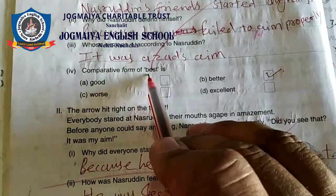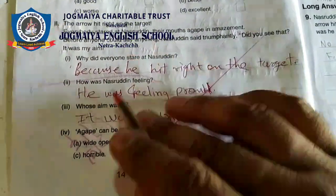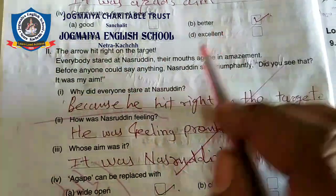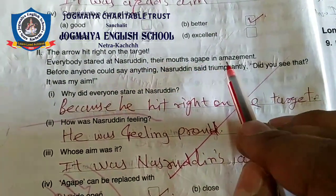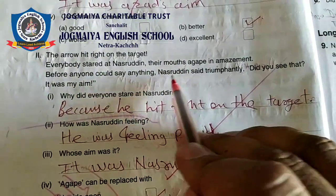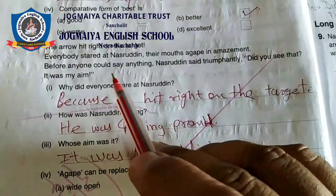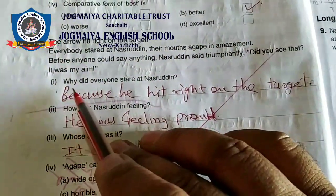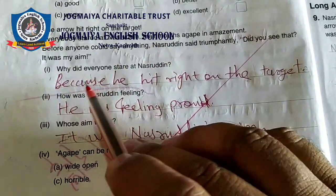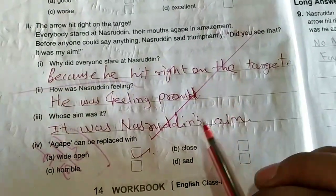The comparative form of 'best' is 'better.' Now, second paragraph: Everybody stared at Nasruddin, their mouths agape in amazement. Before anyone could say anything, Nasruddin said triumphantly, 'Did you see that?' Question 1: Why did everyone stare at Nasruddin? Answer: Because he hit right on the target.